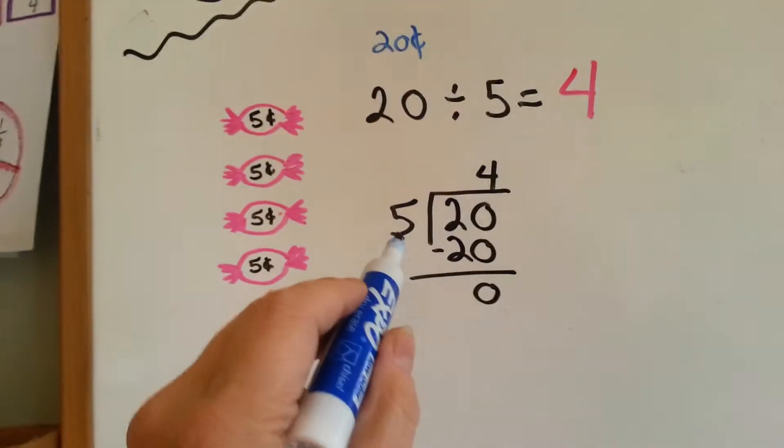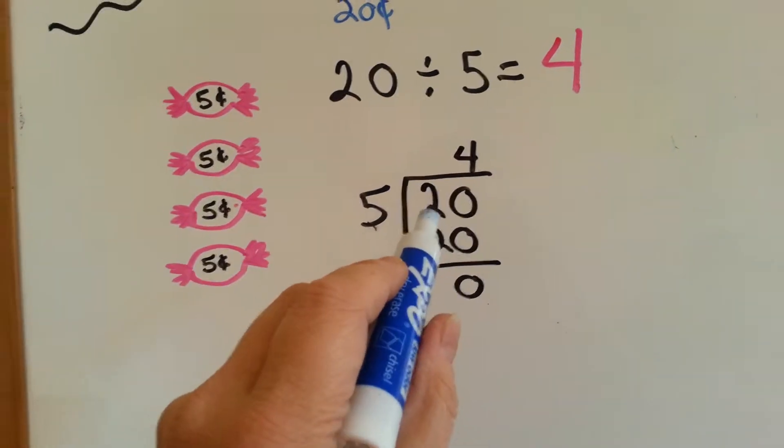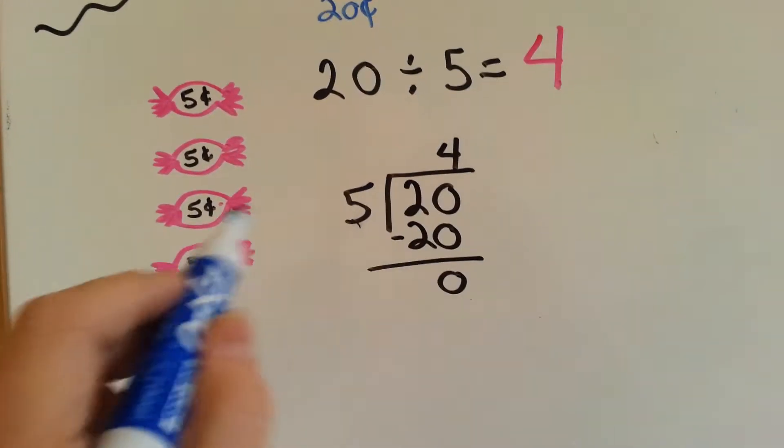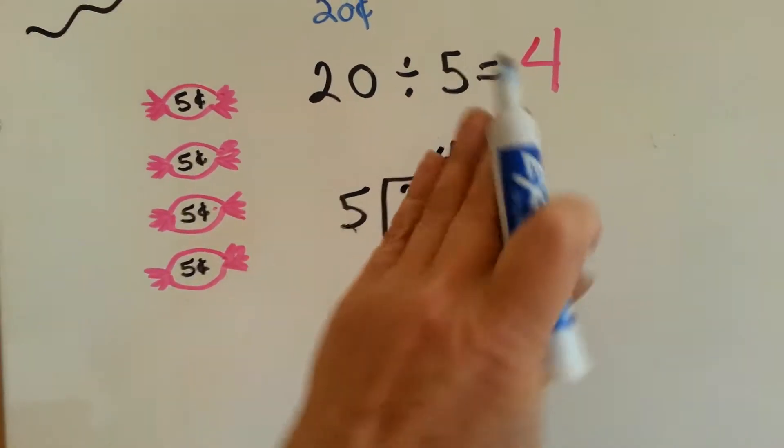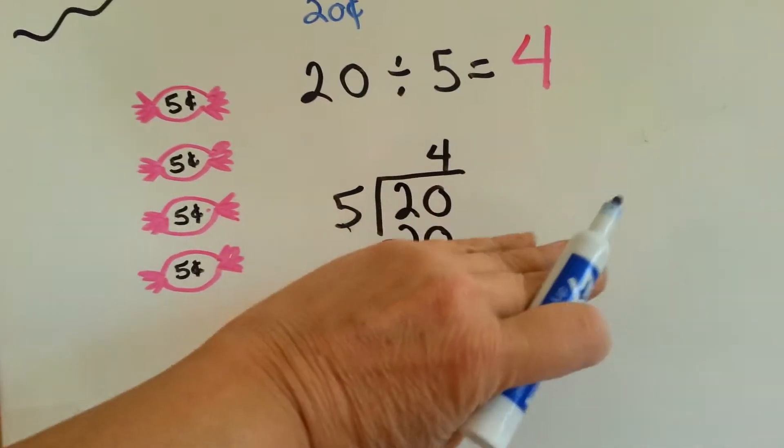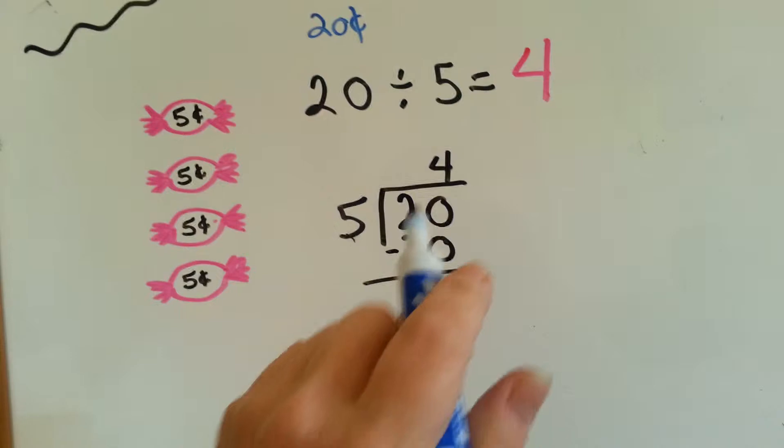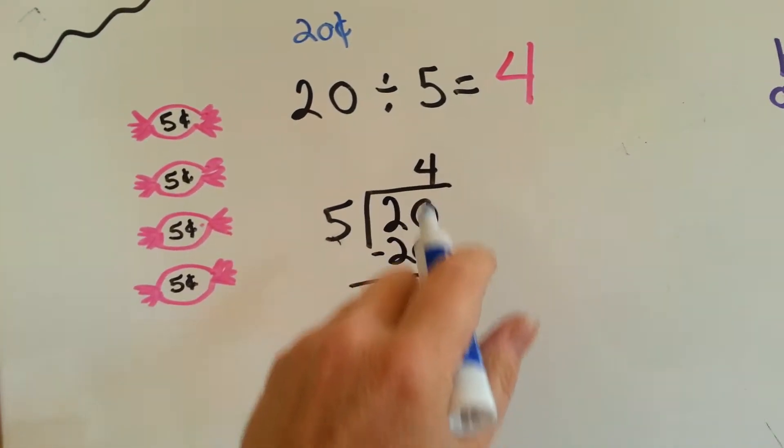The way you do this in long division is you would say 5 goes into 20 how many times? 4 times. So you put the 4 up here, because we're not saying 5 goes into 2, we're saying 5 goes into 20.